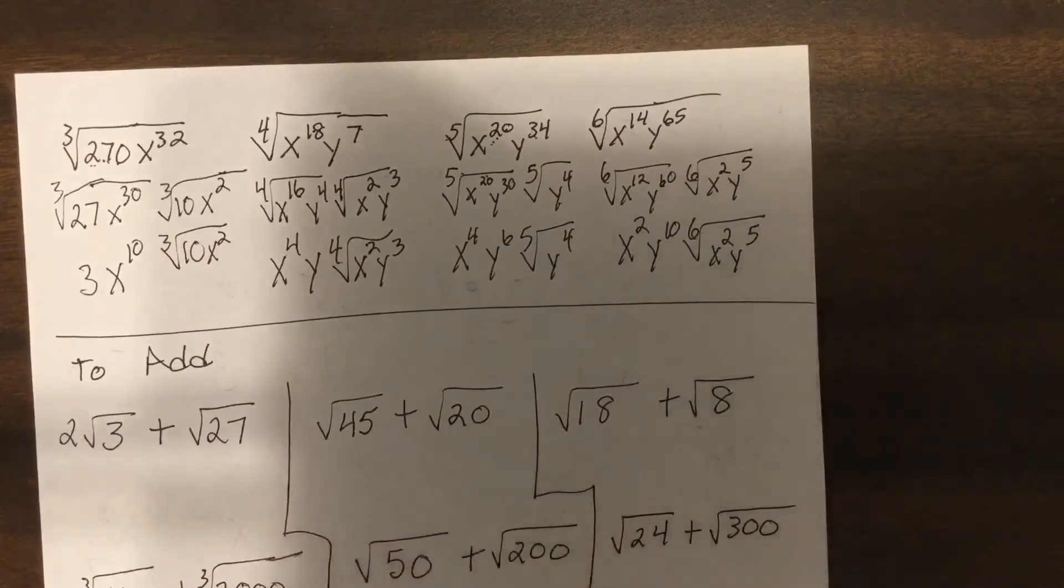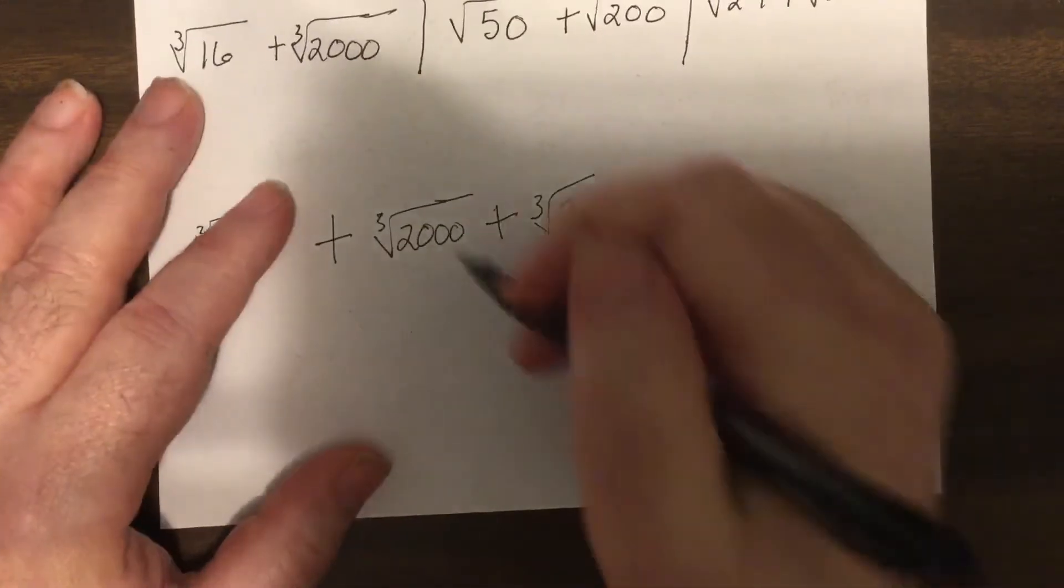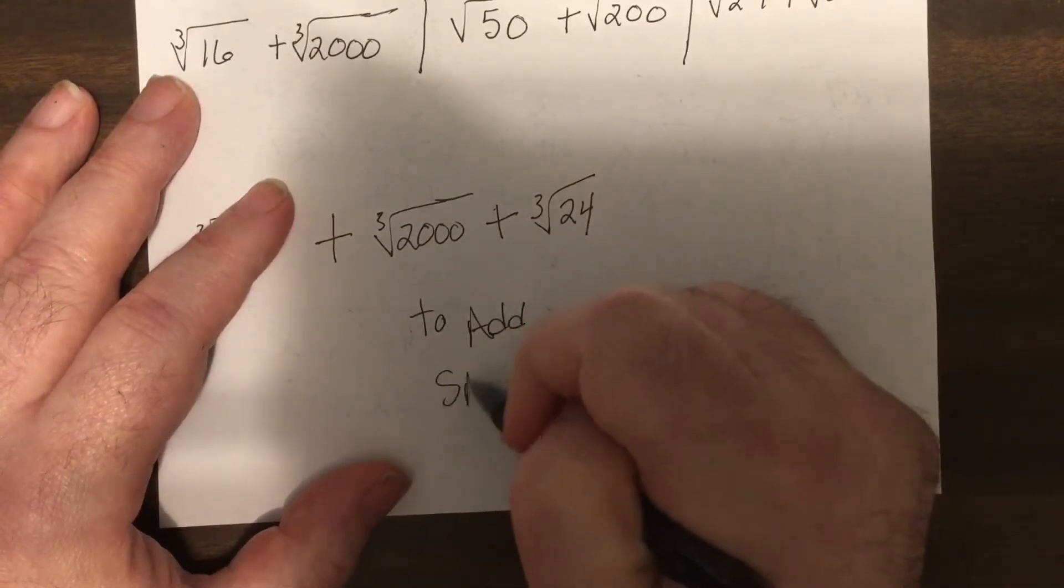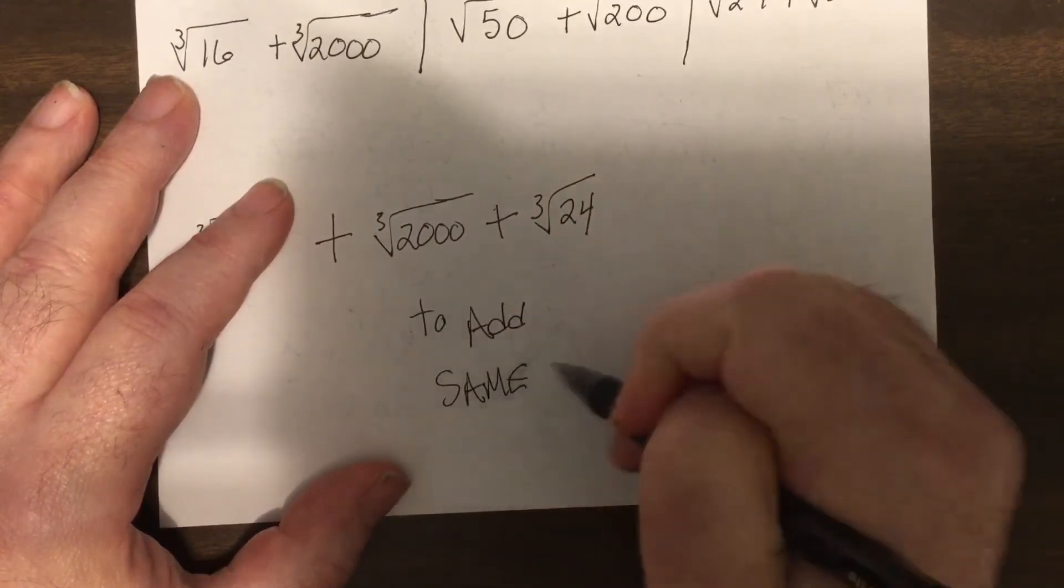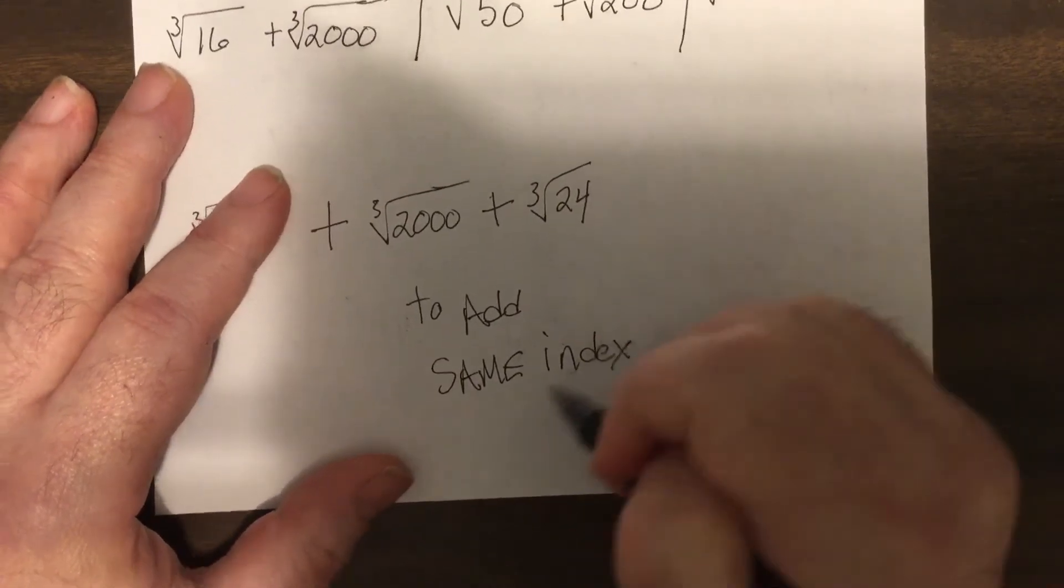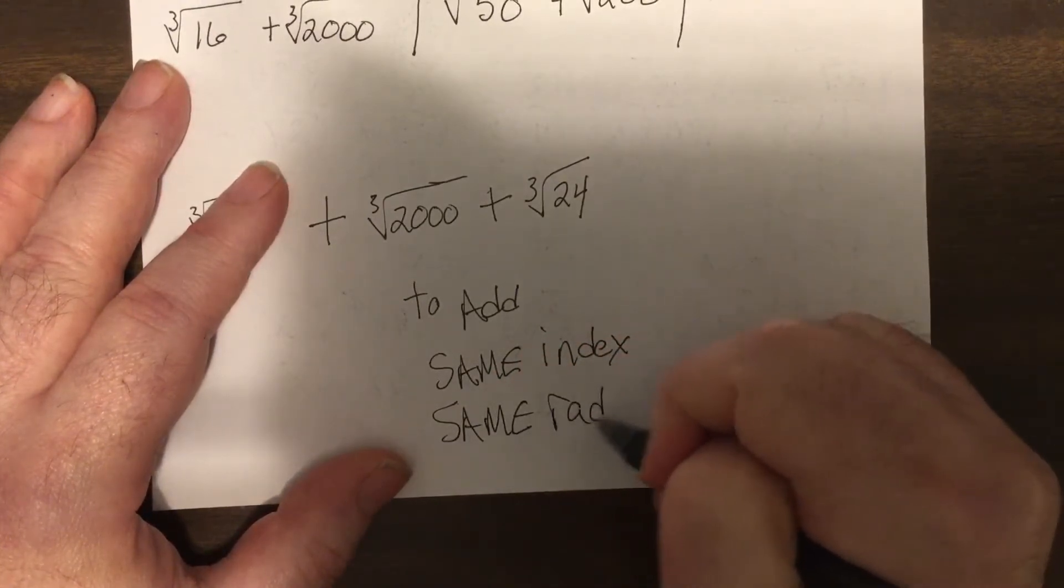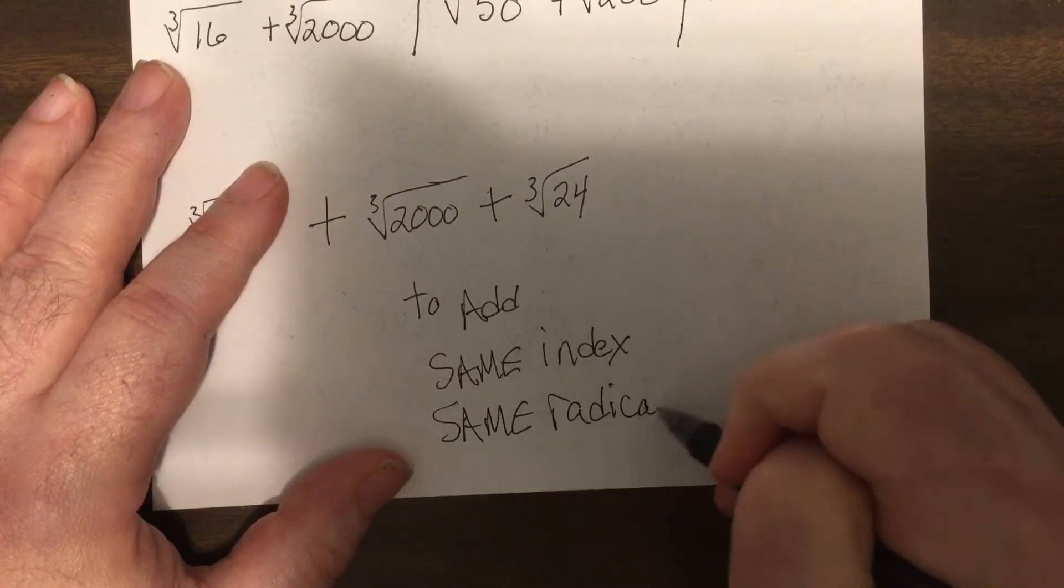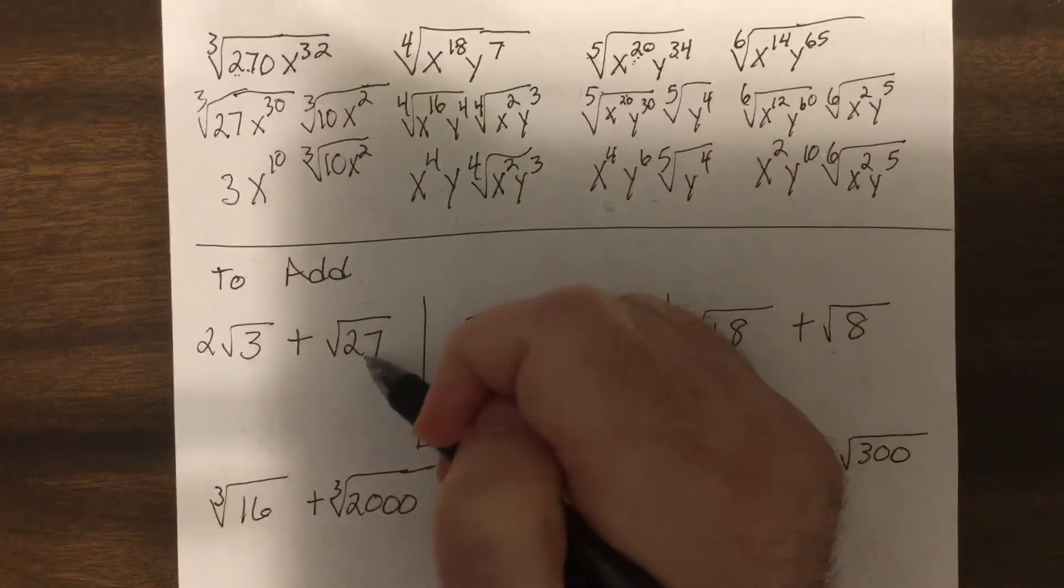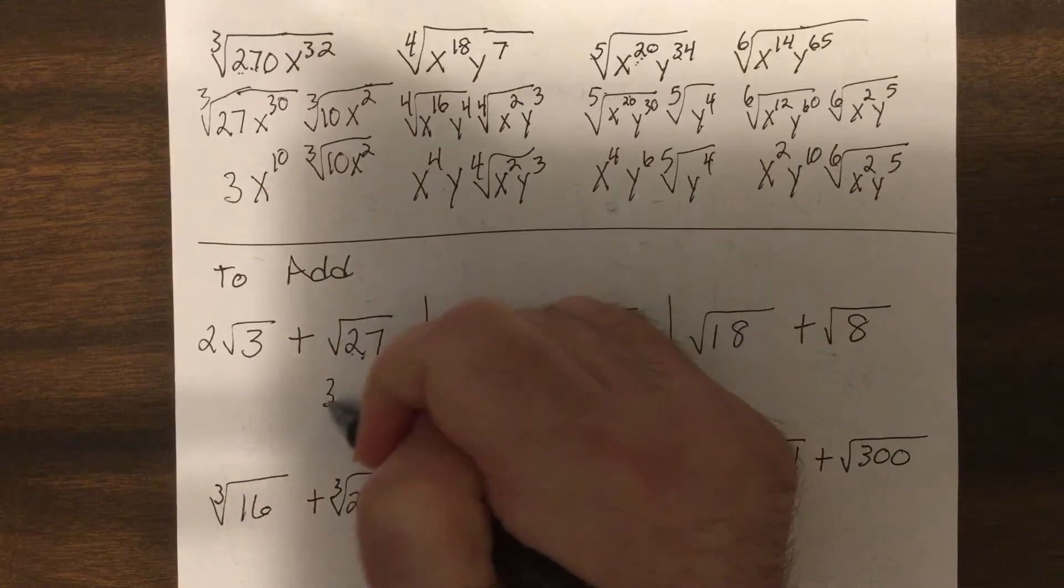Now to add radicals, you must have the same index. So you can only add square roots to square roots, cube roots to cube roots, and the same radicand. That's the number under the radical. So, I cannot combine these, but I can simplify this. 27 would be nine and three, and the square root of nine is three.